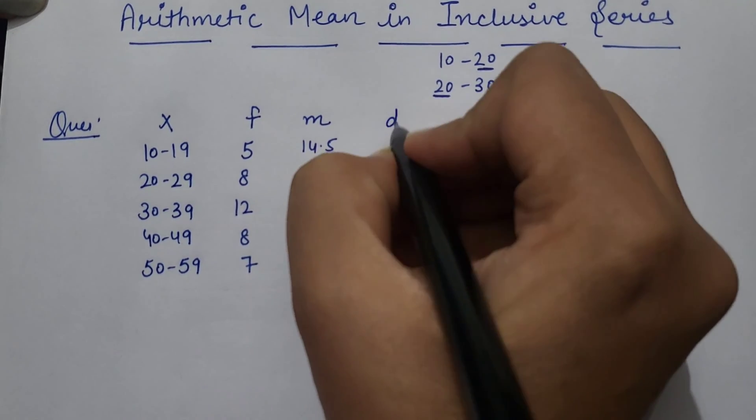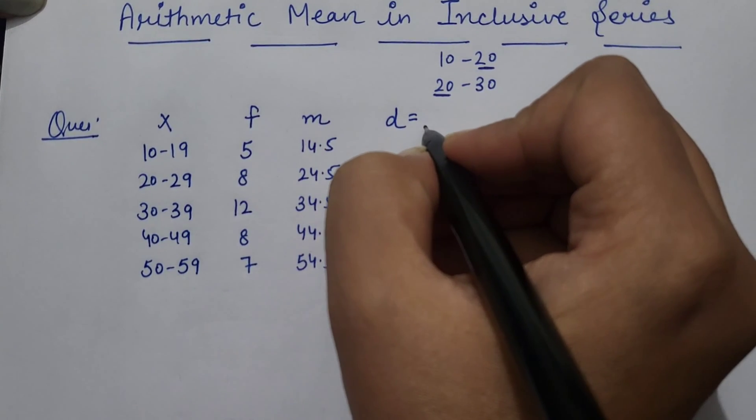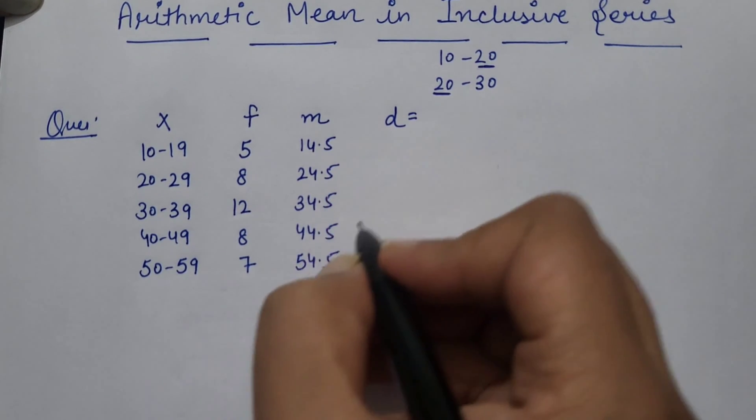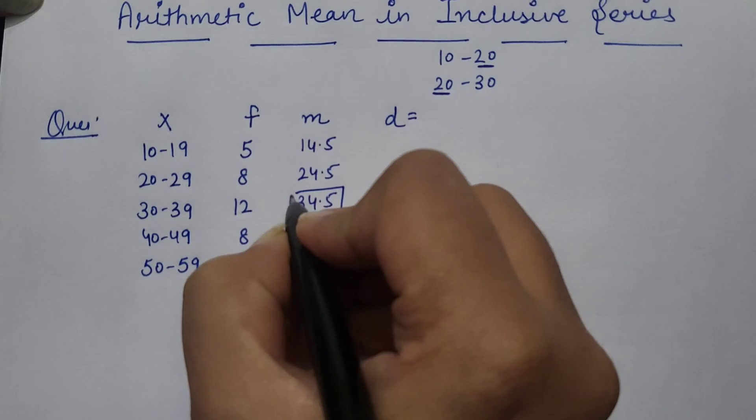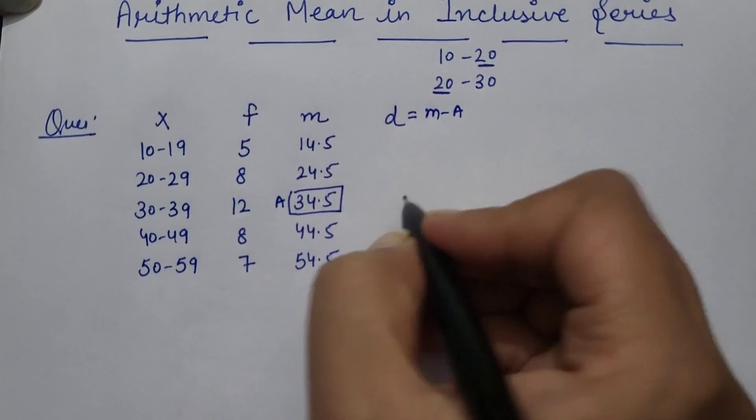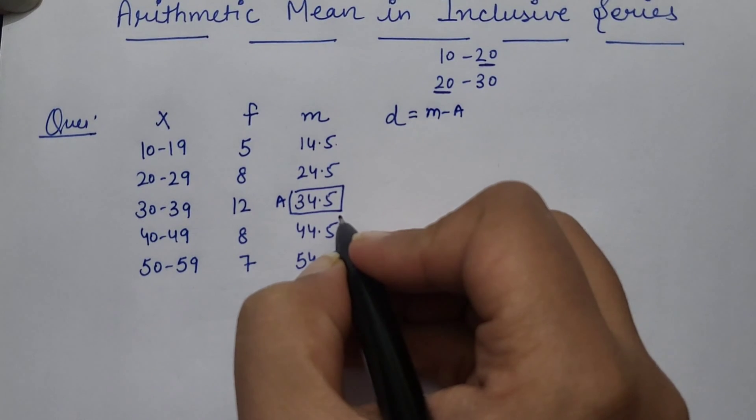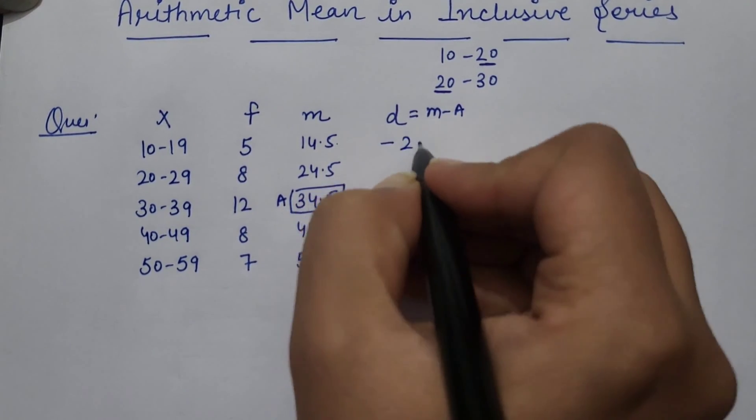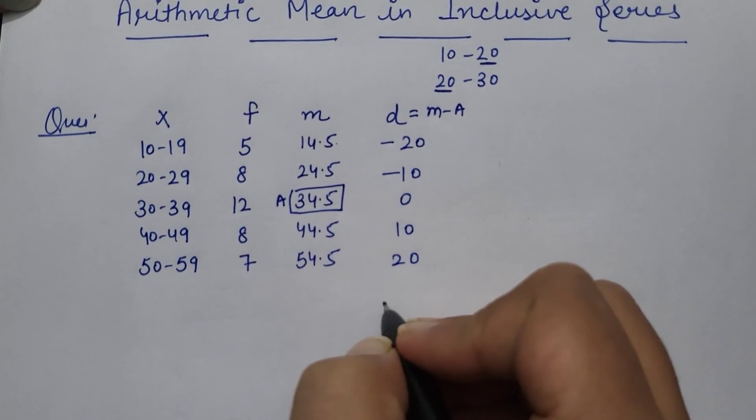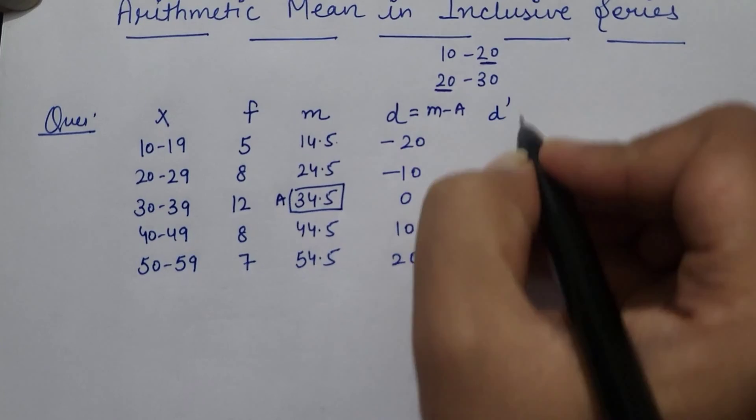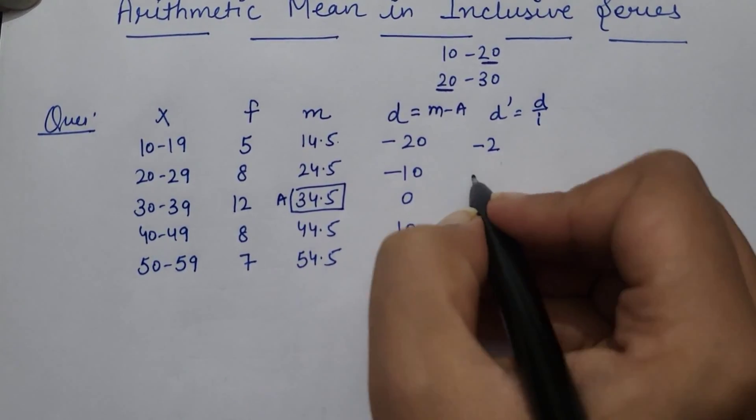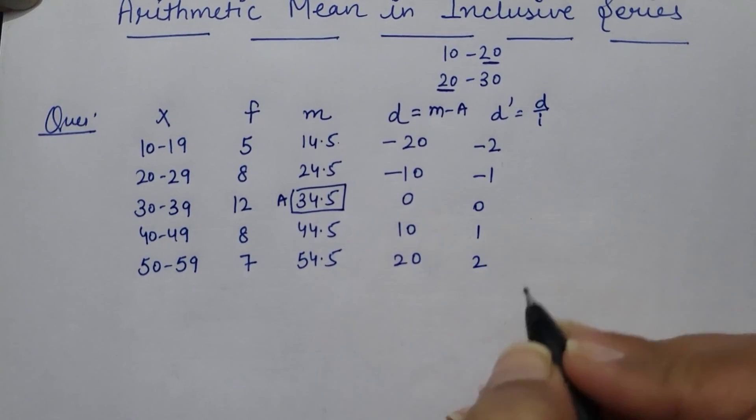So we will take deviations. For that we have to take assumed mean. So here I am assuming 34.5 as mean. So M minus A, 14.5 minus 34.5 is minus 20, minus 10, 0, 10, and 20. So by stepped deviation method, we have to take note of a common factor. We can divide this series.